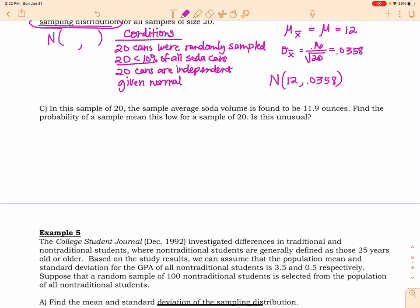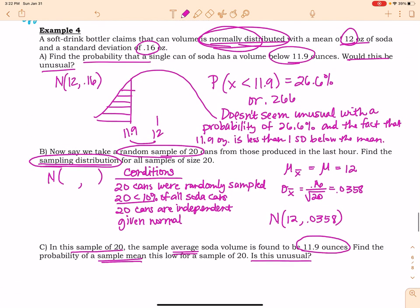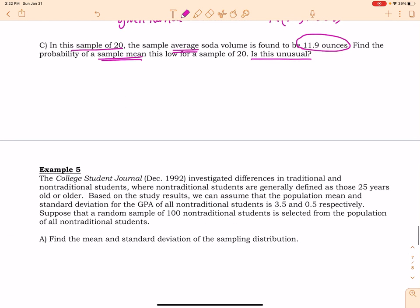Now on part C, in this sample of 20, the sample average soda volume is found to be 11.9 ounces. Find the probability of a sample mean that is this low for a sample of 20. Is this unusual? Okay, so I want you to notice the difference in the language here from part A and part C. I was finding in part A the probability a single can of soda had a volume below 11.9, and we found it to not be very unusual. Now I want to know how likely it is that if I take a sample of 20, it will have an average soda volume to be 11.9 or less.